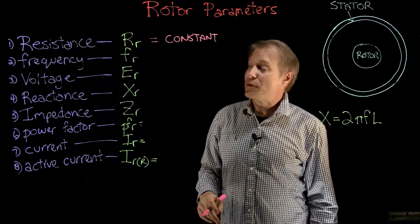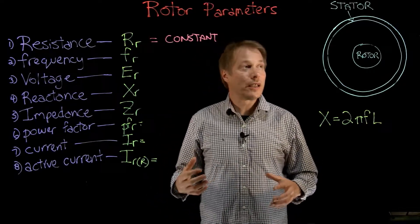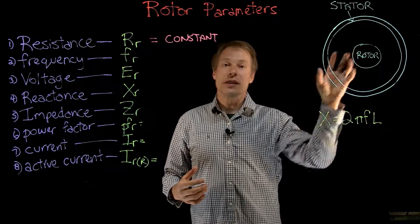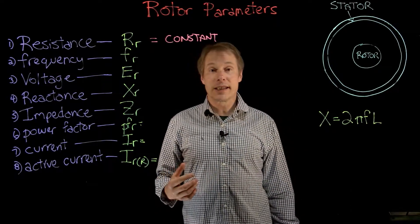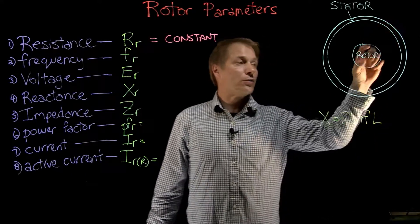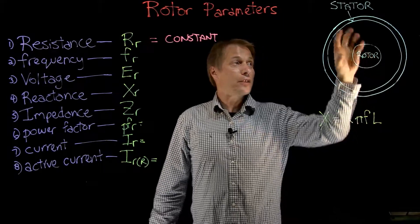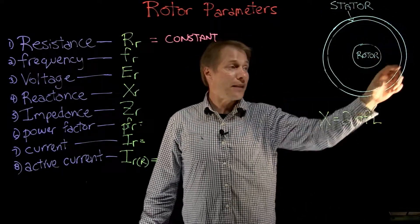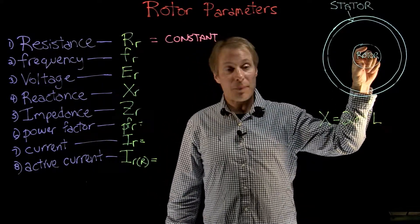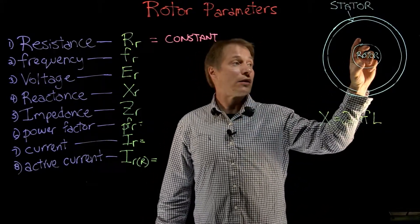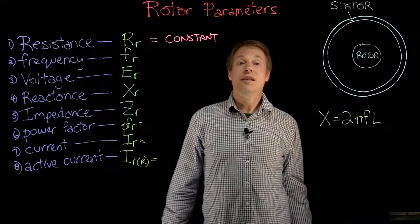Now let's move on to frequency — this is a different story. The easiest way to explain this is to think of our motor as a transformer, where the stator is the primary winding and the rotor is the secondary winding. At blocked rotor condition — meaning the rotor is not turning at all — we have the magnetic field spinning around and the rotor stopped. We have relative motion between a conductor and a magnetic field, which is going to induce a voltage and a frequency into the rotor.